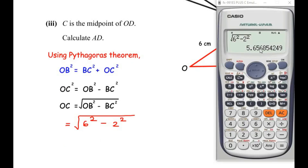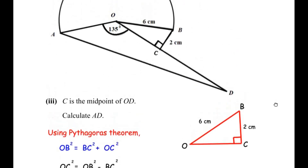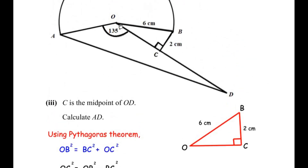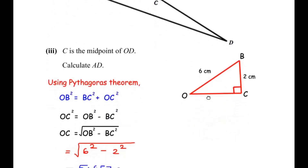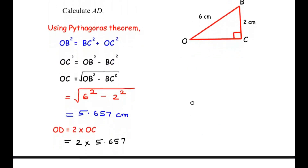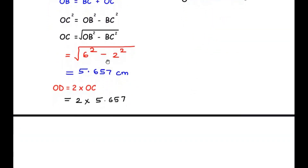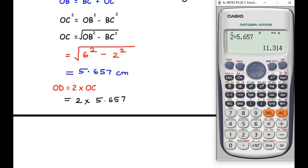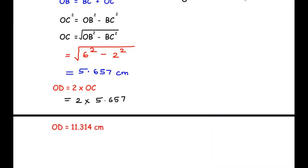This gives a value of 5.6568, which we round to three decimal places as 5.657 — using more decimal places since this is an intermediate step. Since C is the midpoint of OD, we double OC to get the full length: OD equals 2 times OC, which is 2 times 5.657, giving 11.314.